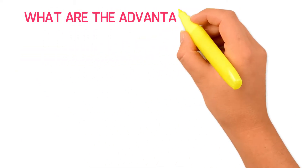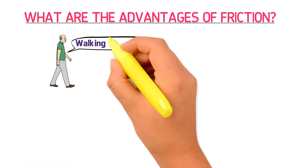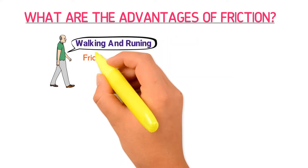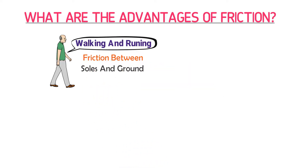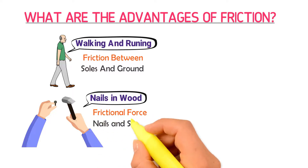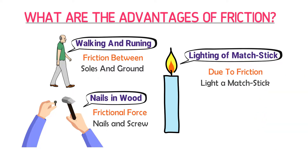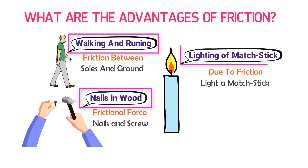The second question is: what are the advantages of friction? There are many advantages of friction, like walking and running. We all walk and run due to the friction between the soles of our shoes and the ground — without ground friction, we won't be able to walk or run. Secondly, holding nails and wood — it is the frictional forces that hold nails or screws and wood. Thirdly, lighting of a match stick — due to friction, we can light a match stick in order to burn something or set it on fire.